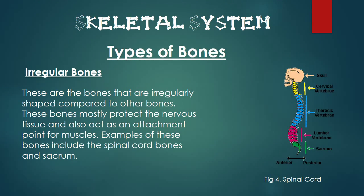Lastly is the irregular bones. These bones are irregular in shape and do not fit into the other categories. These bones mostly protect the nervous tissue and also act as an attachment point for muscles. Examples of these bones include the spinal cord bones and sacrum.